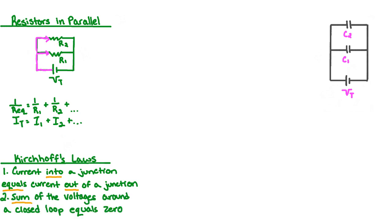Kirchhoff's second law states that the sum of the voltages around a closed loop equals zero. Each branch in a parallel circuit is considered a closed loop. Therefore, we can say that the potential difference of the battery, VT, is equal to the potential difference across resistor 1, V1, is equal to the potential difference across resistor 2, V2, and so on.